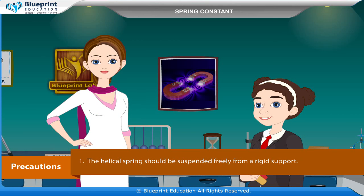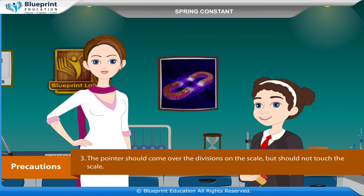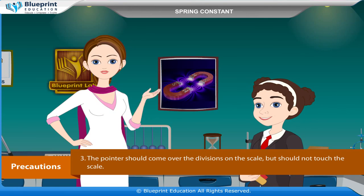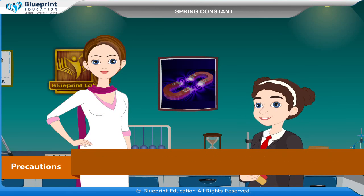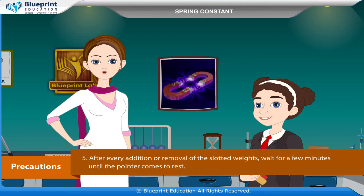Precautions: The helical spring should be suspended freely from a rigid support. The spring should not be loaded beyond its elastic limit. The pointer should come over the divisions on the scale but should not touch the scale. Loading and unloading of weights must be done gently. After every addition or removal of slotted weights, wait for a few minutes until the pointer comes to rest.